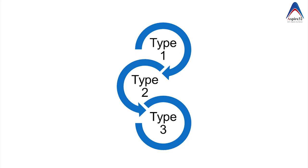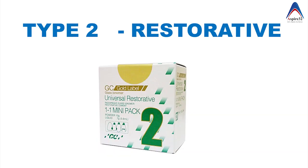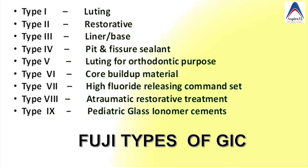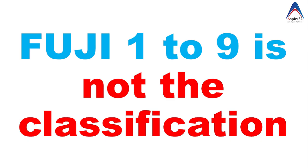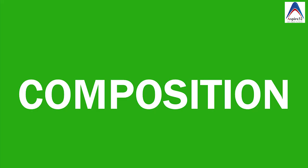Let's talk about the classification first. It is classified as Type 1, which is for luting of crowns and bridges. Type 2 is meant for the restorative variety. There is also Type 3 glass ionomer cement, which is used for base and liner. There is also the branding name given by Fuji — the manufacturer — and students sometimes get confused. For example, Fuji 9 is a restorative cement, which is a type of Type 2 glass ionomer cement, not a separate type.